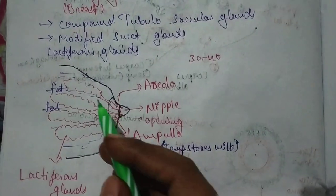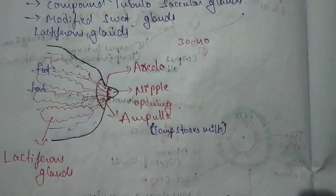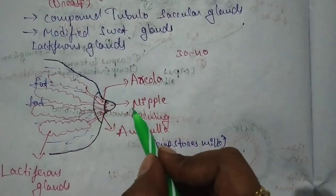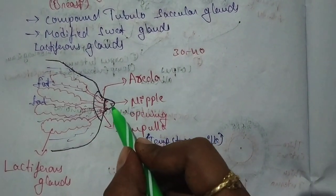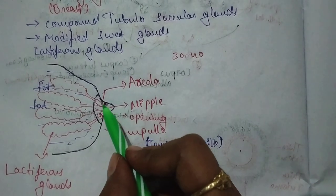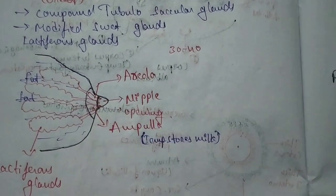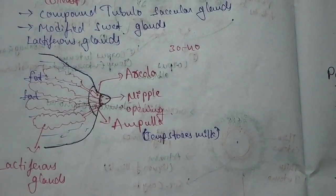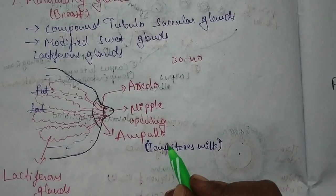Structurally, it consists of the nipple area. This is the nipple area, and besides this, the areolar part is present here. This part is the ampulla.